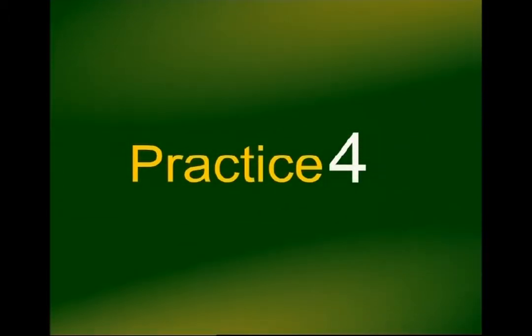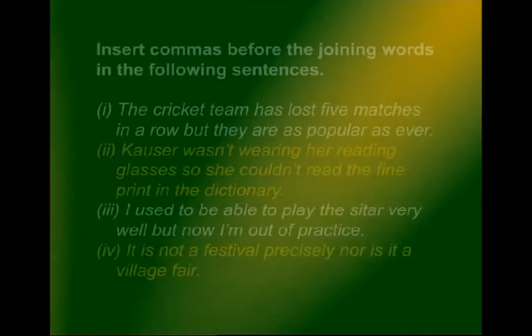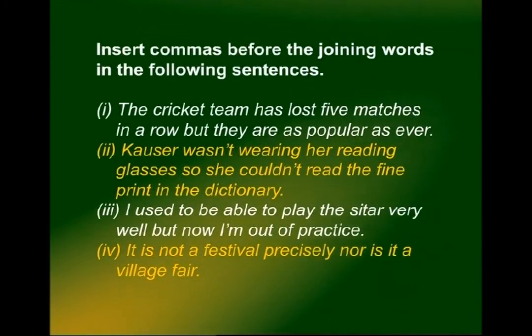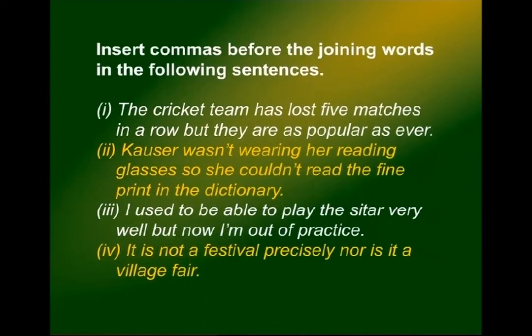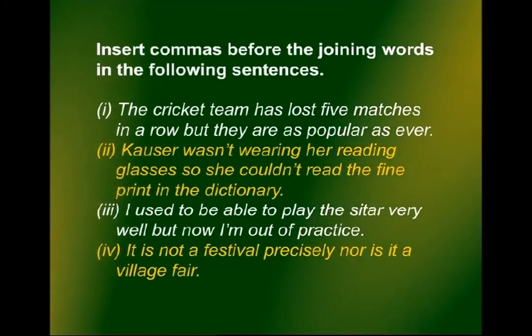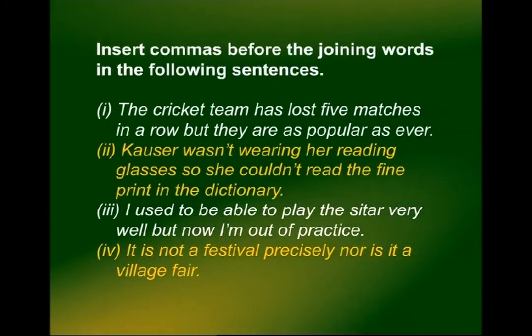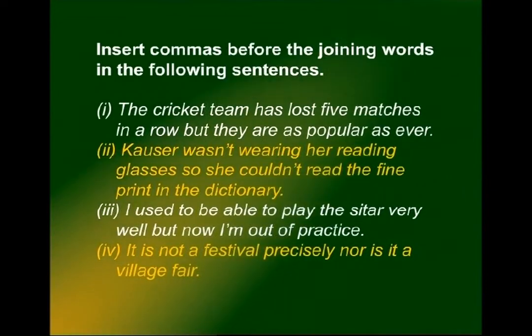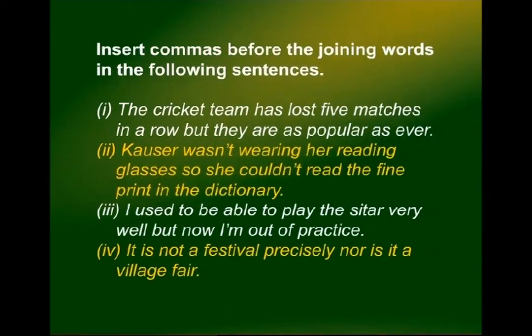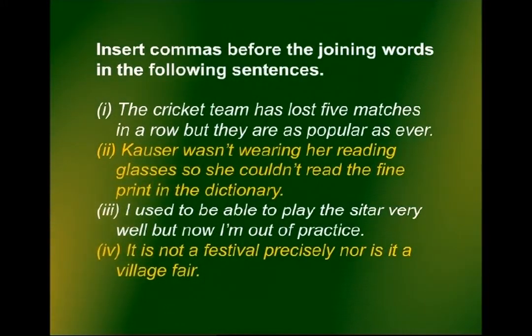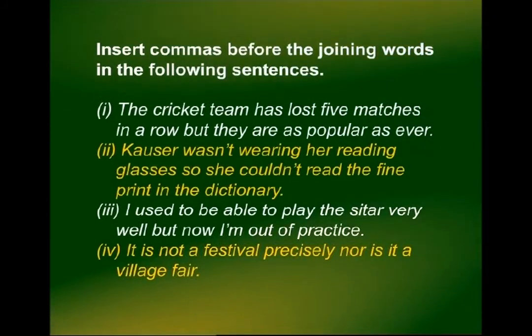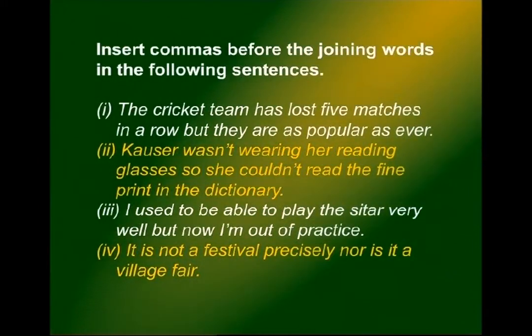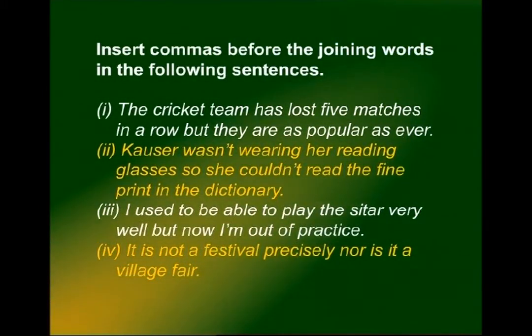Practice for rule four. One: 'The cricket team has lost five matches in a row, but they are as popular as ever' — comma after 'row'. Two: 'Cossar wasn't wearing her reading glasses, so she couldn't read the fine print in the dictionary' — comma after 'glasses'. Three: 'I used to be able to play the sitar very well, but now I'm out of practice' — comma after 'well'. Four: 'It is not a festival precisely, nor is it a village fair' — comma after 'precisely'.